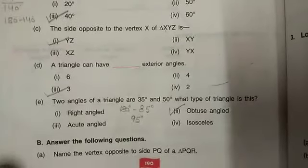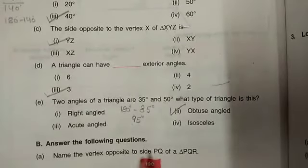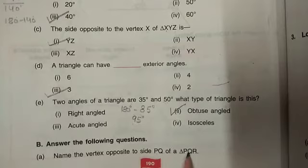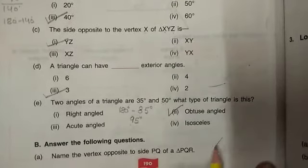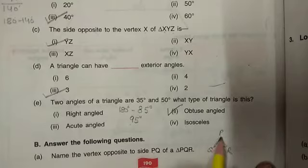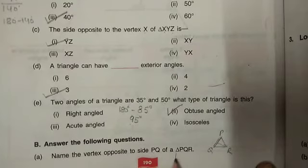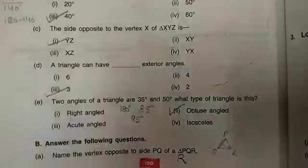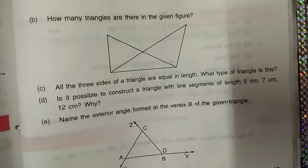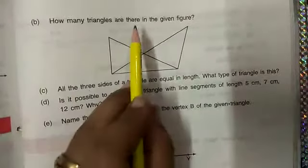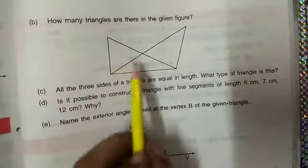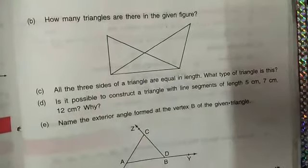Next question: name the vertex opposite to side PQ of triangle PQR. If triangle is PQR, this is PQ, opposite vertex should be clearly R. Next part, how many triangles are there in the given figure? You will count these triangles yourself.